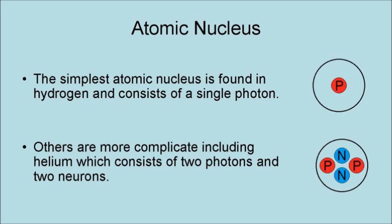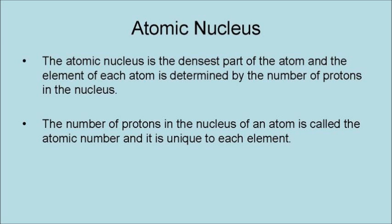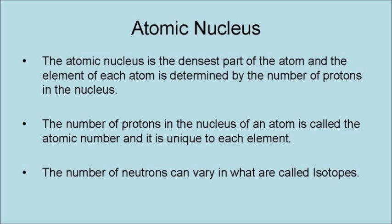Others are more complicated, including helium, which consists of two protons and two neutrons. The atomic nucleus is the densest part of the atom, and the elements of each atom are determined by the number of protons in the nucleus. The number of protons in the nucleus of an atom is called the atomic number, and it is unique to each element. By contrast, the number of neutrons in an atom can vary in what are called isotopes.